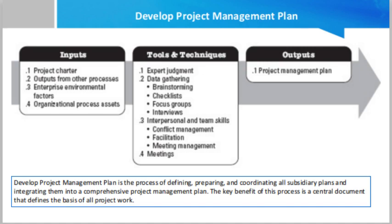Another approach to developing a project management plan is gathering and collecting all subsidiary plans. Subsidiary plans are the output documents from planning in each knowledge area. These plans include the scope management plan, schedule management plan, cost management plan, communication management plan, process improvement plan, staffing management plan, quality management plan, risk management plan, and procurement management plan. When you create and follow a plan composed of these nine subsidiary plans, you have a map that guides your decisions and helps you reach a successful project.